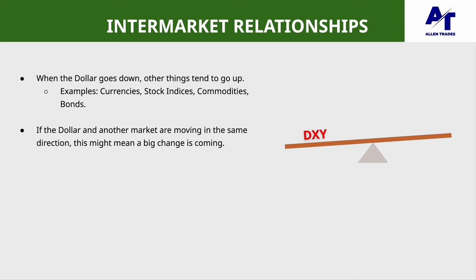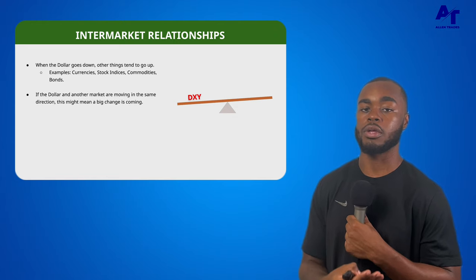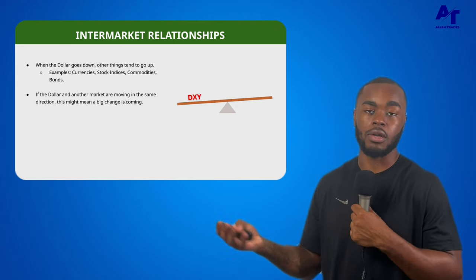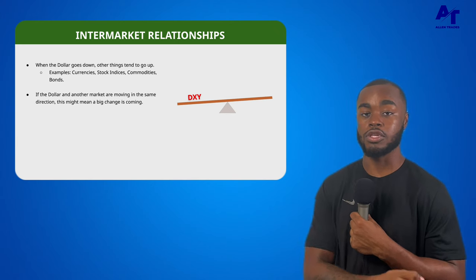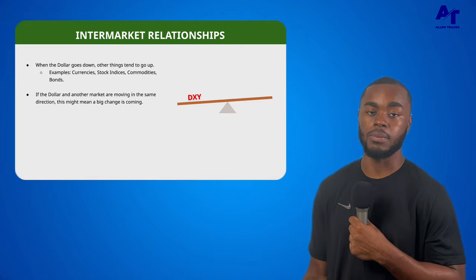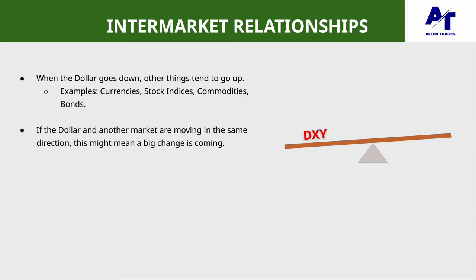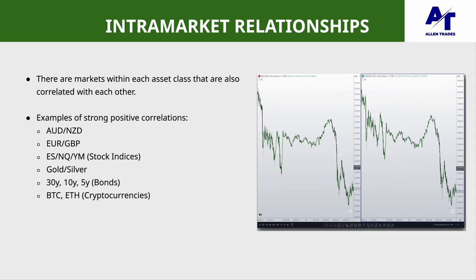Think of it like a roadmap — when you do see these markets trading in the same direction, have your antennas up and be ready for a potential market shift for the next couple months or years. The longer that they trade in concert with each other, the bigger the change is probably going to be. We have a seesaw diagram here — the dollar is on the left side weighing it down. If the dollar is going down, then all other asset classes should be rising. Moving on to intra-market relationships: there are markets within each asset class that are also correlated with each other. The difference between inter and intra is that inter covers all the different asset classes being correlated to each other, while intra refers to markets within each asset class that are correlated with each other.